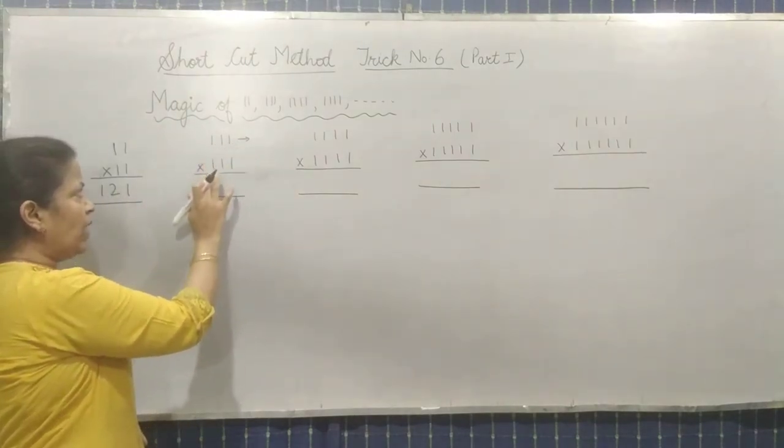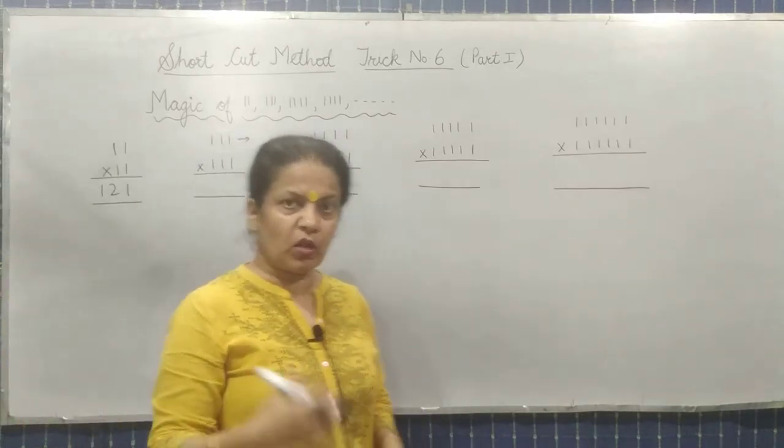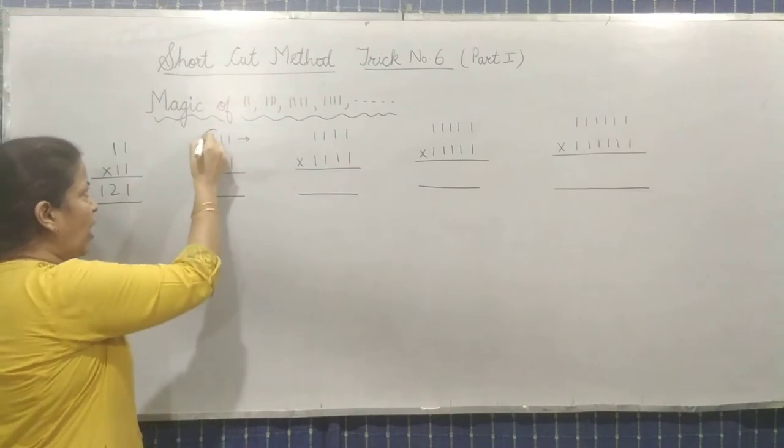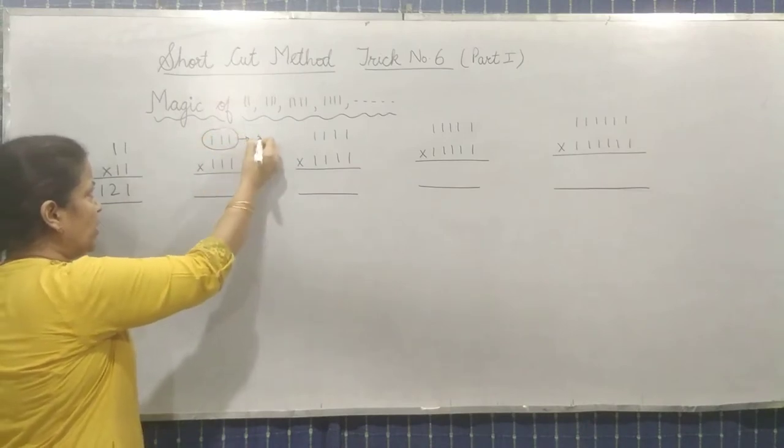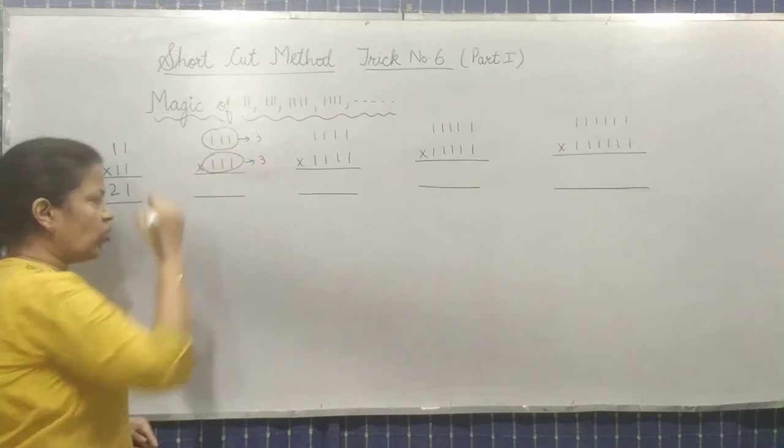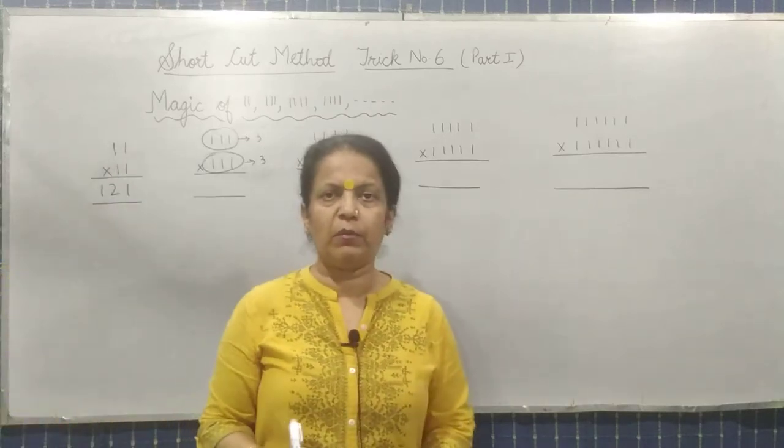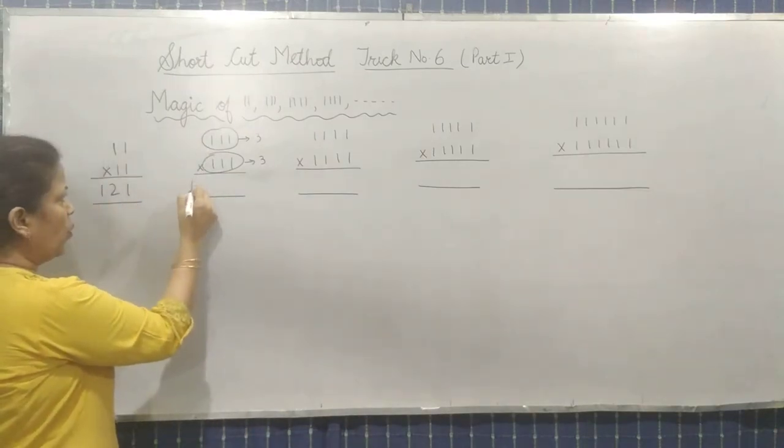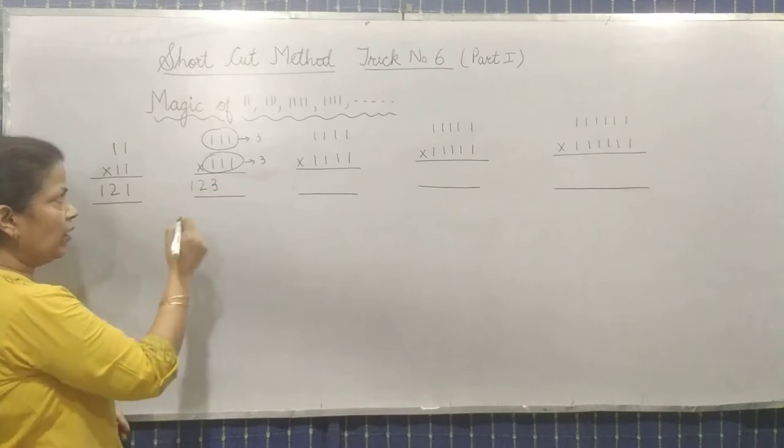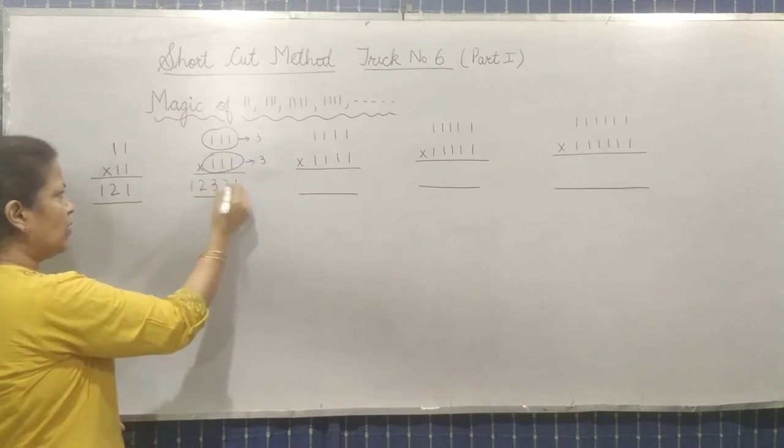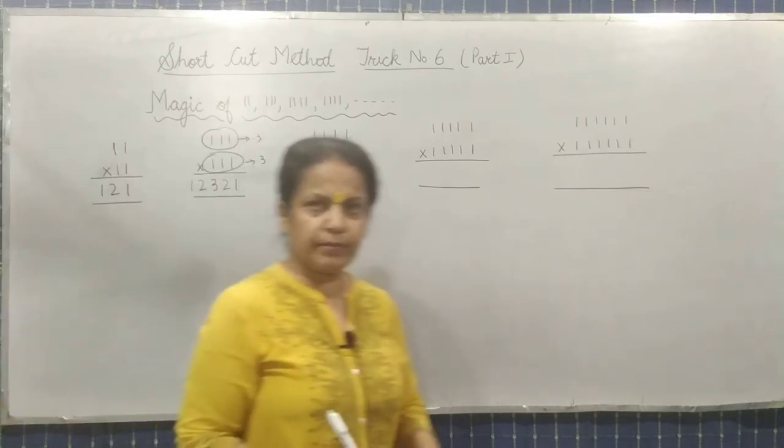111 multiply, 3 times 1. So how will you get the answer? Now here how many 1's are there? 3. And here also the number of 1's are 3. So when you multiply like this, what will you do? You will write 1, 2, 3, one up to that. And then decrease to 1. Clear?